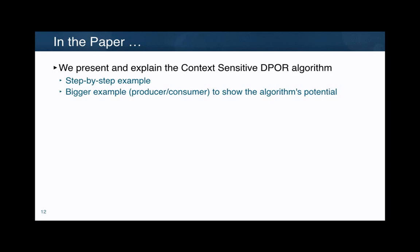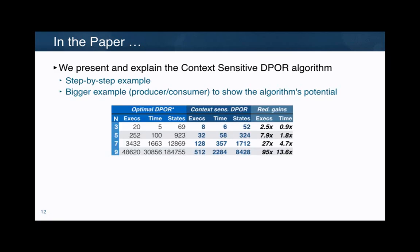In the paper, we present all the details of this algorithm, a step-by-step example, and a bigger example where we observe the algorithm's potential. With tiny examples, you cannot observe the real potential. We can get exponential reductions. In a producer-consumer example with three producers and consumers, we get a reduction in the number of states. But with nine producers and nine consumers, we see a huge difference in the number of states, and one order of magnitude of reduction in time for this example.